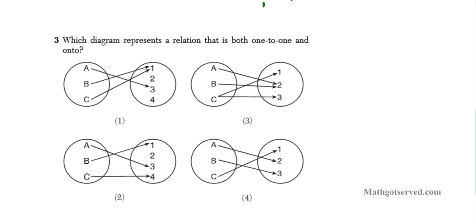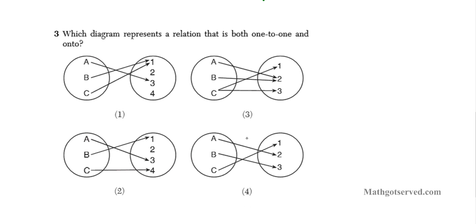Let's take a look at question 3. It says: which diagram represents the relation that is both 1-to-1 and onto? Let's talk about onto-ness first and then the whole idea of being 1-to-1. Which of these relations are onto? Onto basically means that for every element in your output, there is an input that is mapped to it.